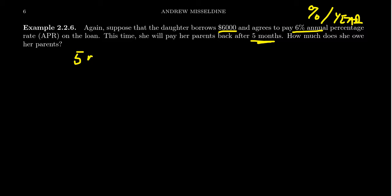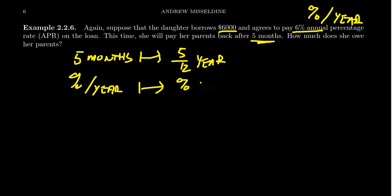We could switch five months into years, in which case it would be five twelfths of a year. That's perfectly acceptable. We could also switch this to percentage per month by taking percentage per 12 months. We have to either take the timeframe and divide it by 12 so that it becomes years, or take the APR and divide it by 12 to make it a monthly percentage rate. For simple interest, it doesn't make really much of a difference which direction you go here.